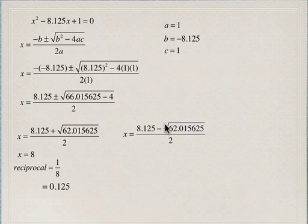If we consider the case where we subtract the square root of the discriminant, then x comes out to be 0.125, and the reciprocal of that is 1 over 0.125, which is 8.